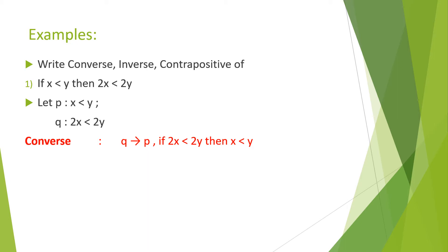Next is inverse. Inverse is negation P implies negation Q — that means if negation P then negation Q. Statement P is 'x is less than y,' so its negation is 'x is not less than y,' which we can also write as 'x is greater than or equal to y.' Remember, it is not x greater than y — it is x greater than or equal to y. Similarly, negation Q is '2x is greater than or equal to 2y.'